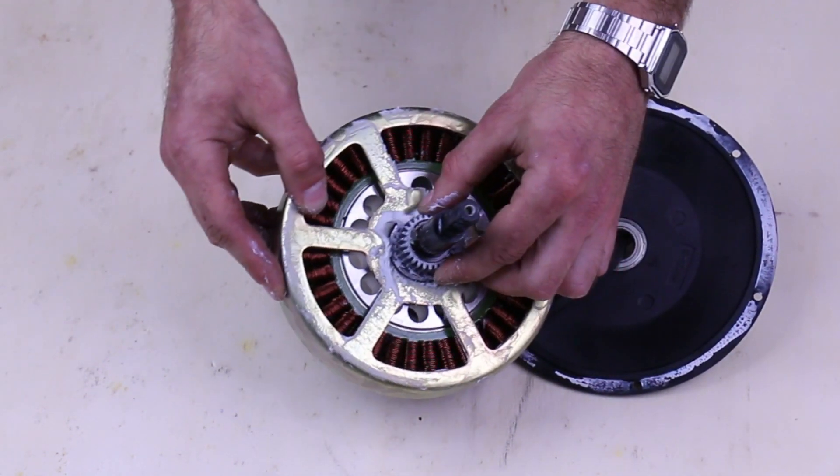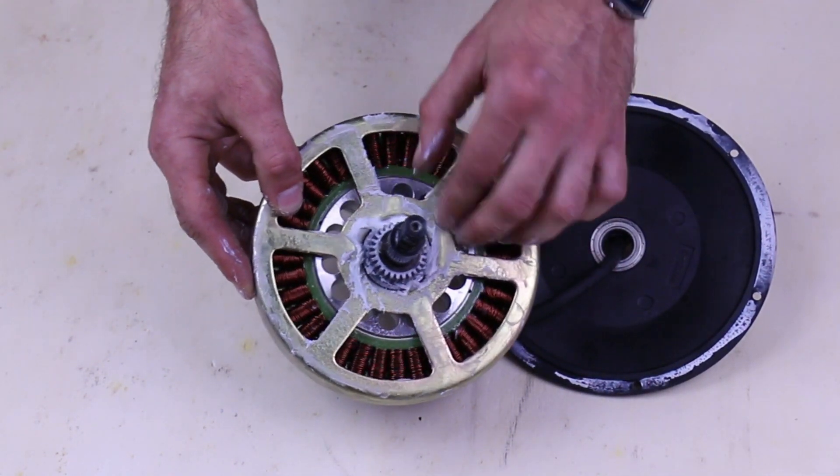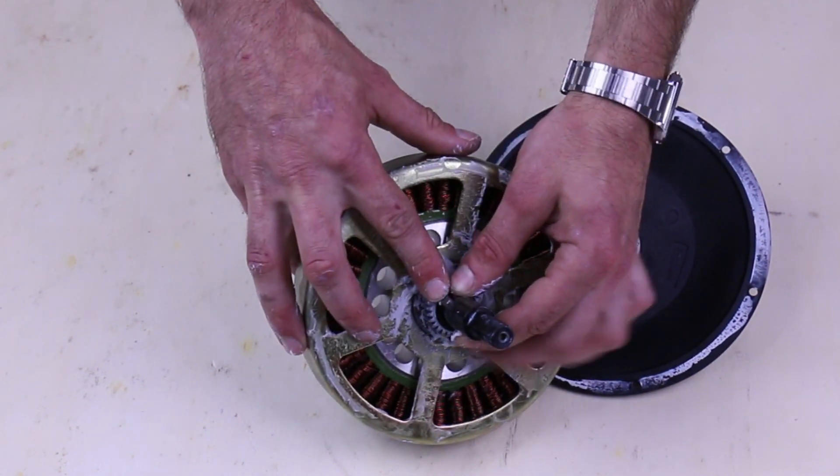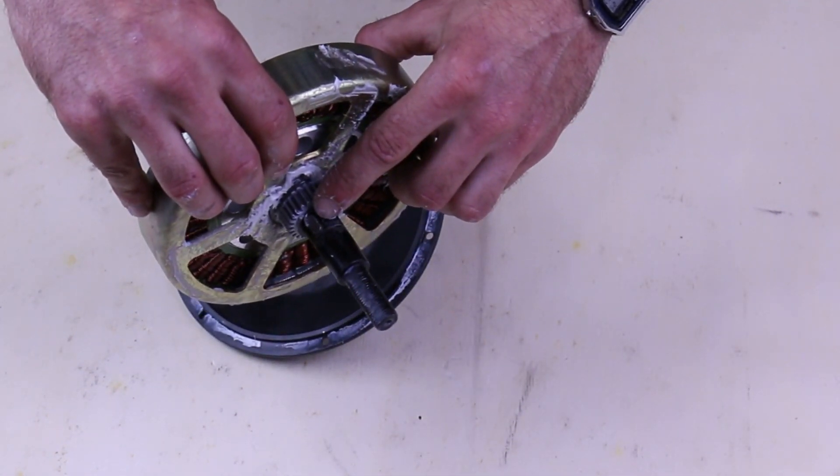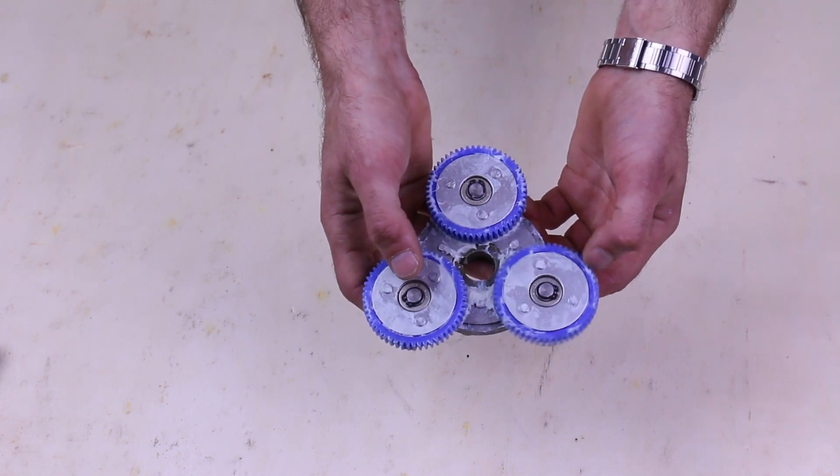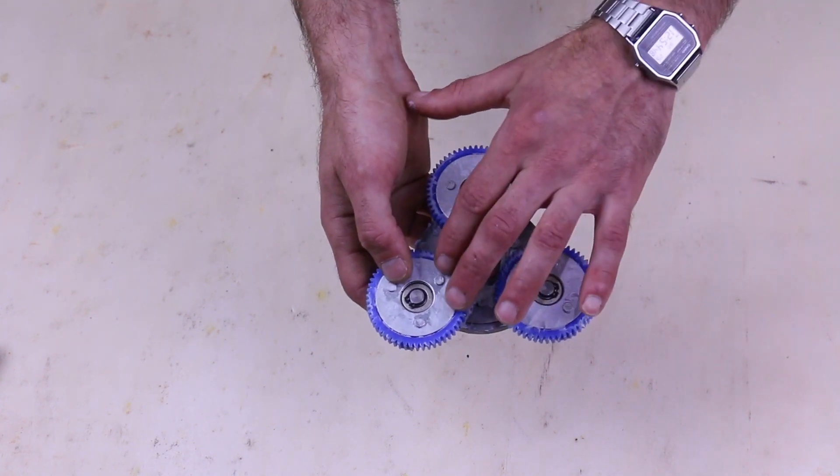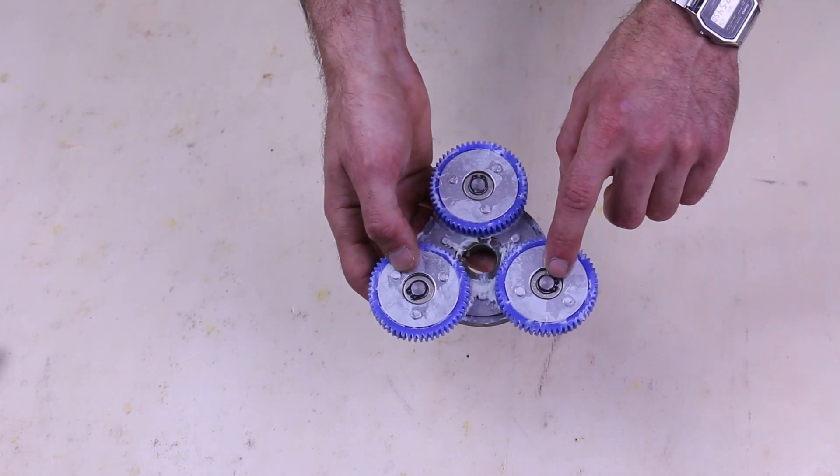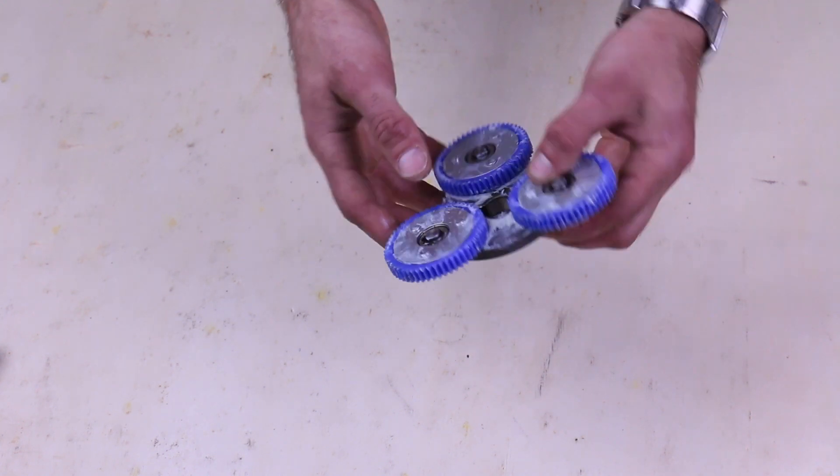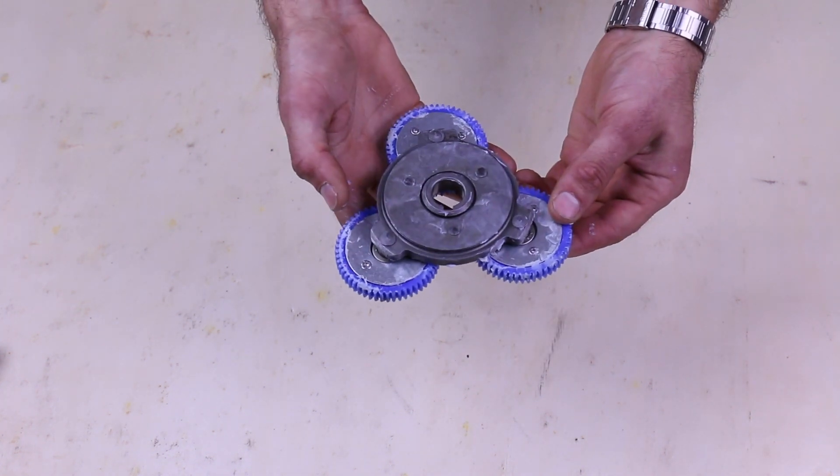Once the motor is disassembled to this point, there's really not much more service that can be done. This keyway here is really important not to lose. The freewheel assembly can be serviced pretty easily. These gears can be replaced if they're damaged just by removing this snap ring. And you can also replace the entire assembly as one piece.